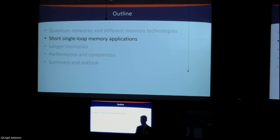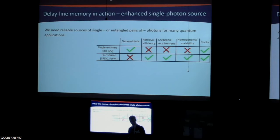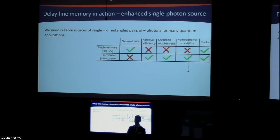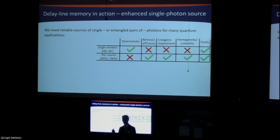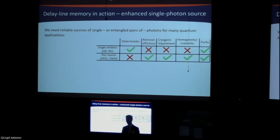Even though it's a short 12.5 nanosecond storage time, there are still significant improvements you can get with this technology. One application is that virtually every quantum networking application needs a reliable source of single photons — or entangled pairs. One approach is the single-emitter approach, using a quantum dot or nitrogen vacancy center. It's nice in that it's deterministic — you push a button and a photon comes out — but the retrieval efficiency is extremely low, since a single emitter emits into a random direction, requiring a lot of cavity engineering to couple into single-mode fiber.